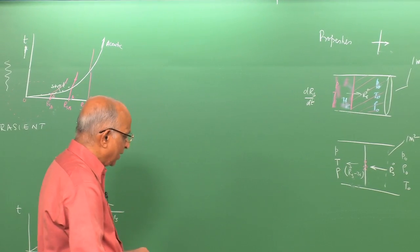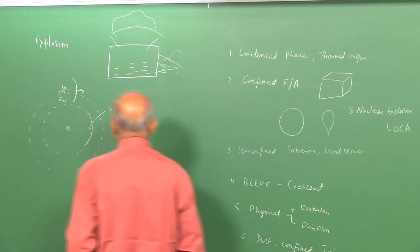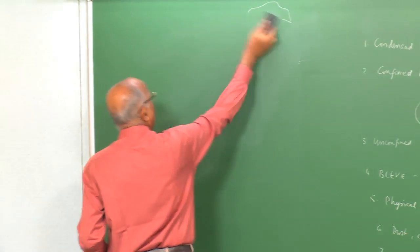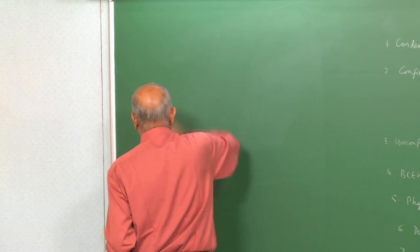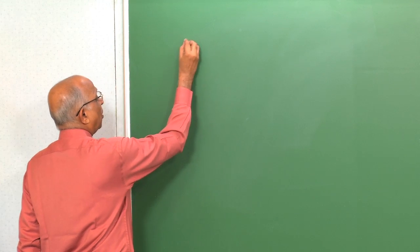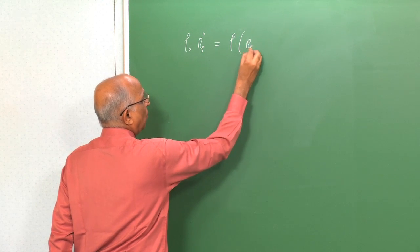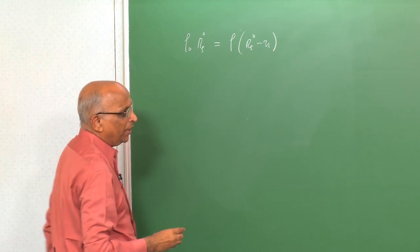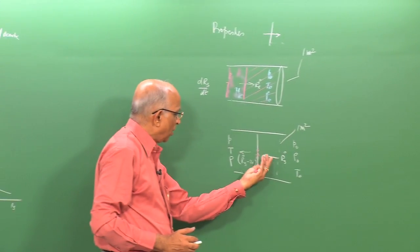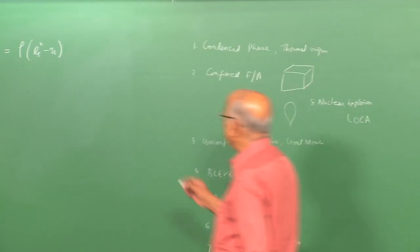The continuity equation states that mass is conserved. In the plane of reference of the shock, the mass flux entering equals the mass flux leaving: ρ₀ · R_s-dot = ρ · (R_s-dot − U). This is the continuity equation — Equation 1.